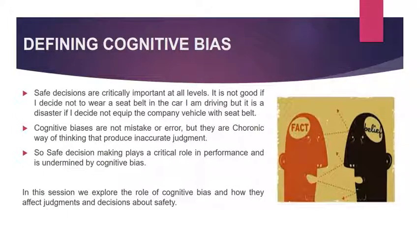Cognitive biases are not mistakes or errors, but they are chronic ways of thinking that produce inaccurate judgement. Safe decision making is critically important at all levels. For example, it is not good if I decide not to wear a seatbelt in my car, but it will be a disaster if I decide not to equip company vehicles with seatbelts. In this session, we will explore the role of cognitive bias and how they affect judgement and decisions about safety.